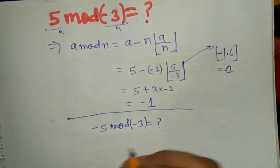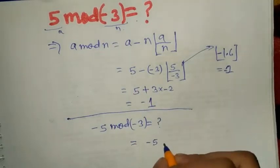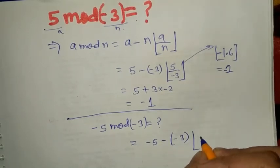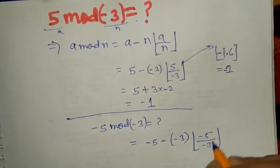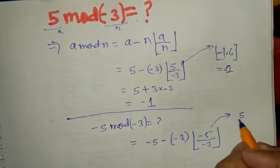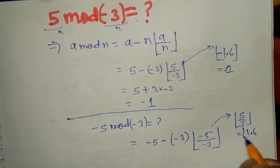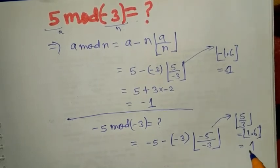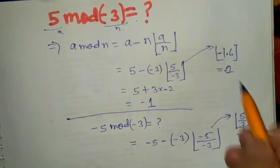Using the above formula, minus 5 minus minus 3 will be minus 5 minus 3. Let's work this first: this will be 5 by 3, which equals 1.6. The floor value of this will be 1. Earlier, floor of minus 1.6 was minus 2. Here, the floor of positive 1.6 is 1.